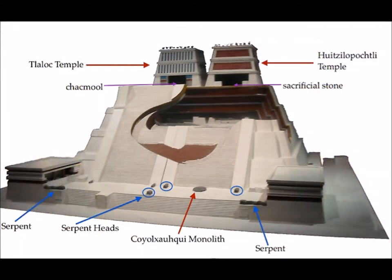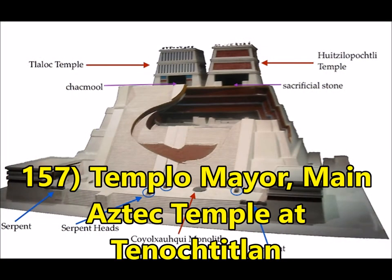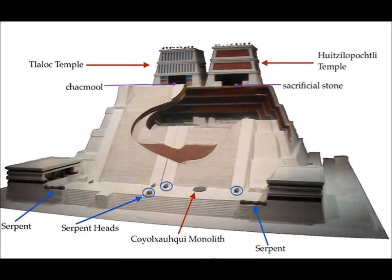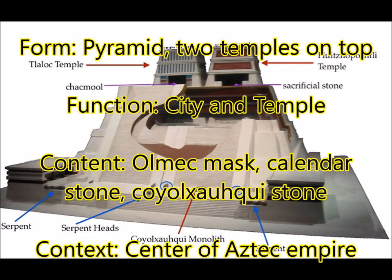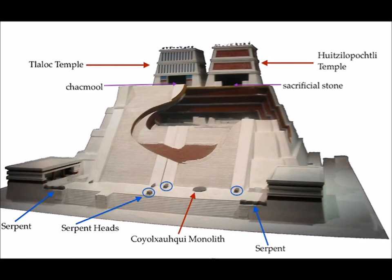For Templo Mayor — the main Aztec temple at Tenochtitlan, which was Mexico City — we're going to go through the Olmec mask, Calendar Stone, and Coyolxauhqui Stone individually. You do need to remember that this was the center of the Aztec Empire and therefore a metropolis of trade. For the pyramid itself, remember there were two temples on top: one for a god and one for a goddess.